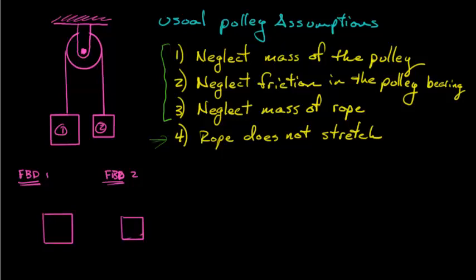The free-body diagram of block 1 on the left here, what do we have? Well, this block has a weight, gravity pulling down, right? So I'm going to call that M1G in the minus J-hat direction, and J-hat positive upwards, as is usual. And it's also going to have a tension on it from the rope pulling up. So let's call this T1, the tension on block number 1, and that one's in the positive J-hat direction.